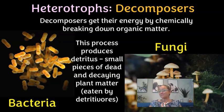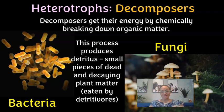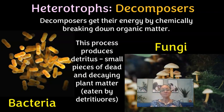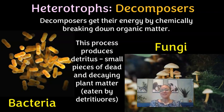To summarize: autotrophs make their own food by converting non-living energy sources — sunlight or chemicals — into usable forms such as carbohydrates. Heterotrophs must get their energy from other organisms and are divided into consumers and decomposers. Consumers include herbivores, omnivores, carnivores, scavengers, and detritivores. Decomposers — bacteria and fungi — don't eat but chemically break down organic matter, recycling nutrients back into the soil.